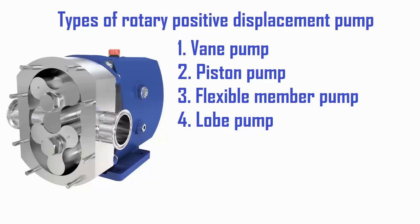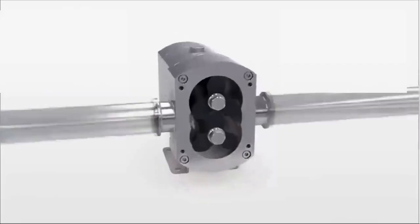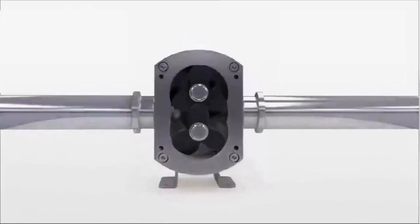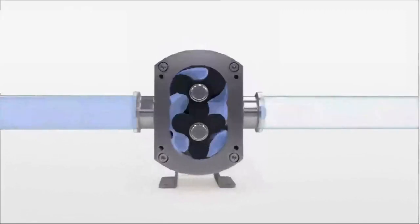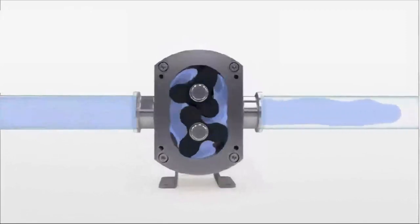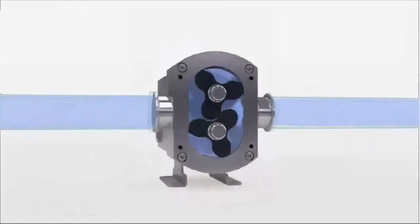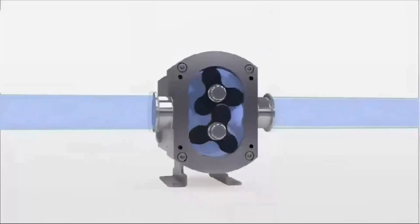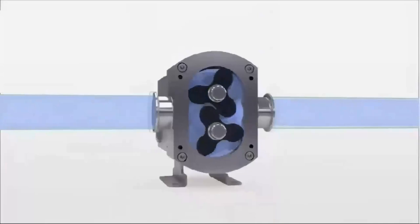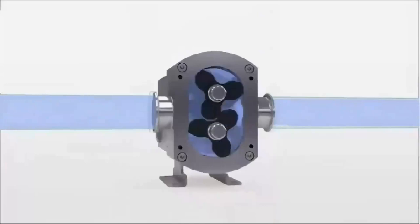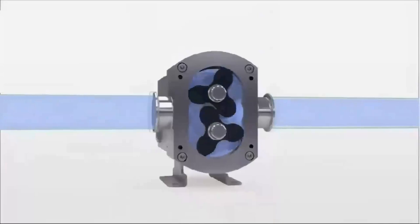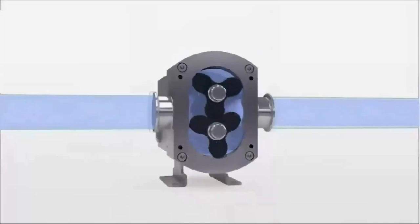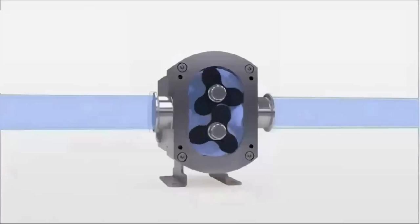The fourth type is the rotary lobe pump. A rotary lobe pump is a pump that uses two or more lobes rotating around parallel shafts in the pump body to move fluid. The sucked fluid is pressed from the fluid inlet side to the fluid discharge side using the cavity between the lobe shape and the pump casing while the lobe rotates.